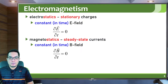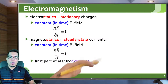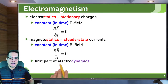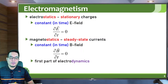Magnetostatics is actually the first part of electrodynamics. Electrodynamics is the field where charges are already moving. The first part of electrodynamics is magnetostatics, and the second part is magnetodynamics — when the currents are in a non-steady state, or when the magnetic field is changing with time.